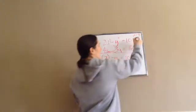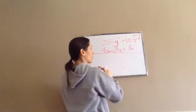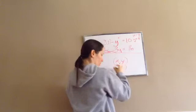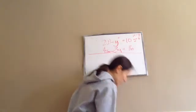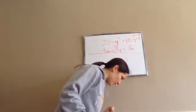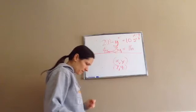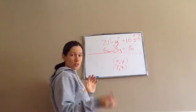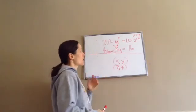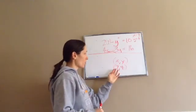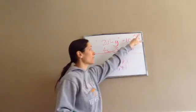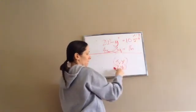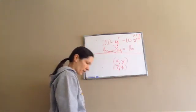So y equals 4. When you write your answer, remember to write it as x comma y. So the answer is (7, 4). That is our answer for the second problem. If you need to, rewind and watch again until you're able to figure it out. You want to get to a place where you have x equals 7 and y equals 4, then write it as the coordinate (7, 4). That's Lesson 59.